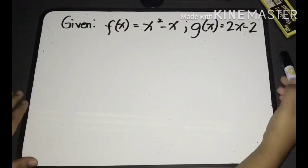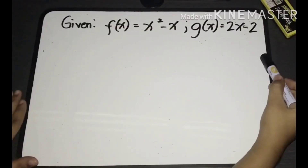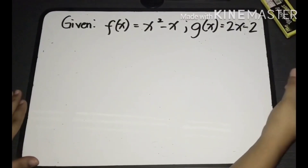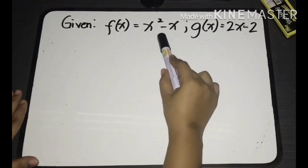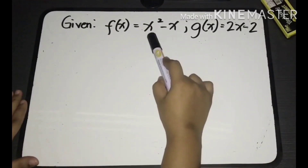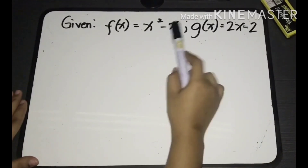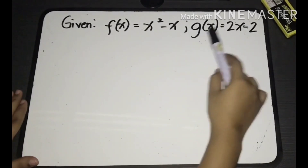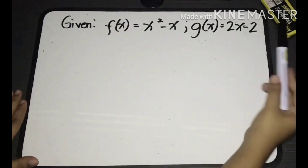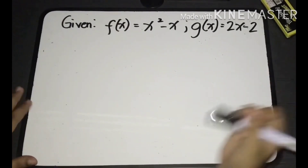Let's have our first example. Given the functions f of x which is equal to x squared minus x, and g of x which is equal to 2x minus 2.